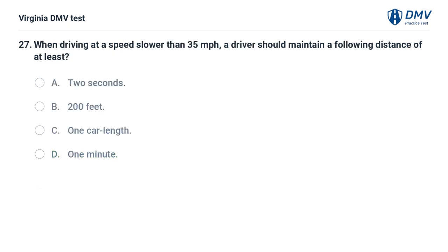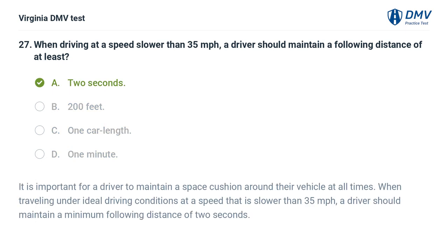When driving at a speed slower than 35 miles per hour, a driver should maintain a following distance of at least: A. Two seconds, B. Two hundred feet, C. One car length, D. One minute. The correct answer is A: Two seconds. It is important for a driver to maintain a space cushion around their vehicle at all times. When traveling under ideal driving conditions at a speed slower than 35 miles per hour, a driver should maintain a minimum following distance of two seconds.